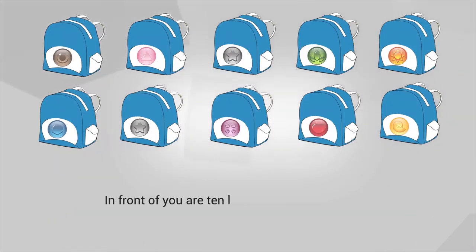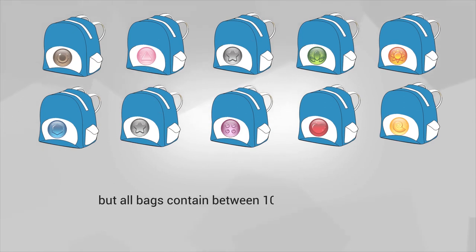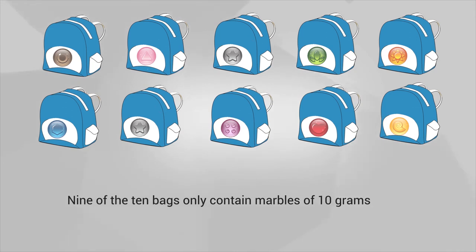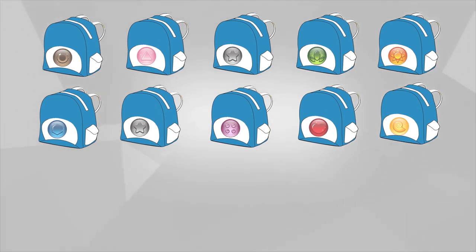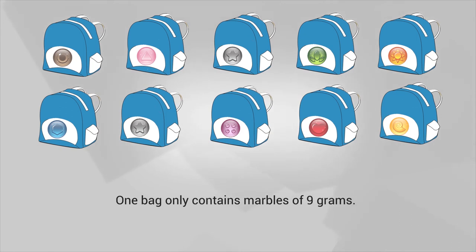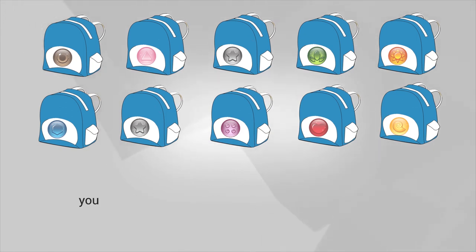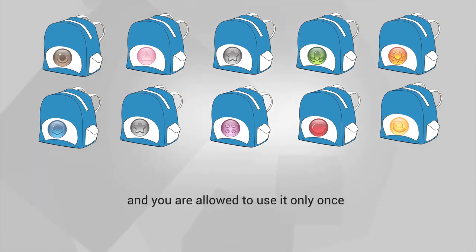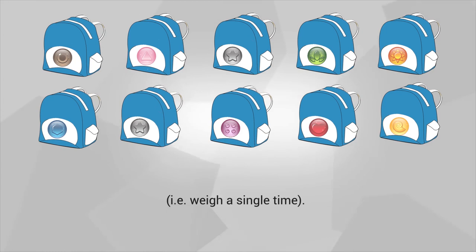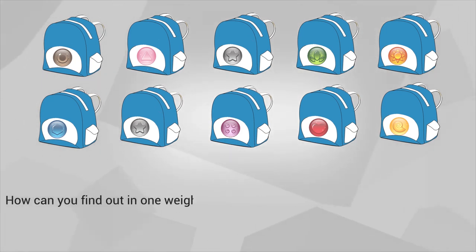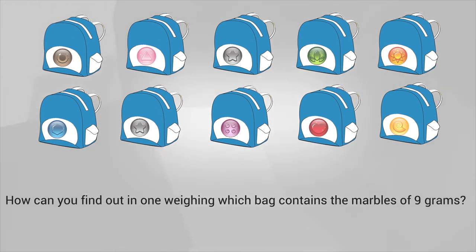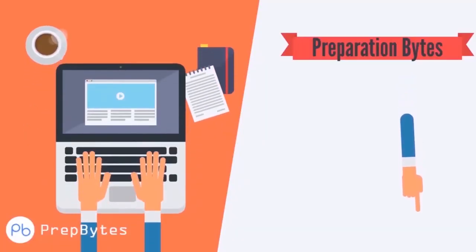In front of you are 10 bags filled with marbles. The number of marbles in each bag differs, but all bags contain between 10 and 50 marbles. Nine of the 10 bags contain marbles of 10 grams each, and one bag only contains marbles of 9 grams. You have a balance that can weigh in grams accurately, and you are allowed to use it only once — that is, weigh a single time. How can you find out in one weighing which bag contains the marbles of 9 grams?